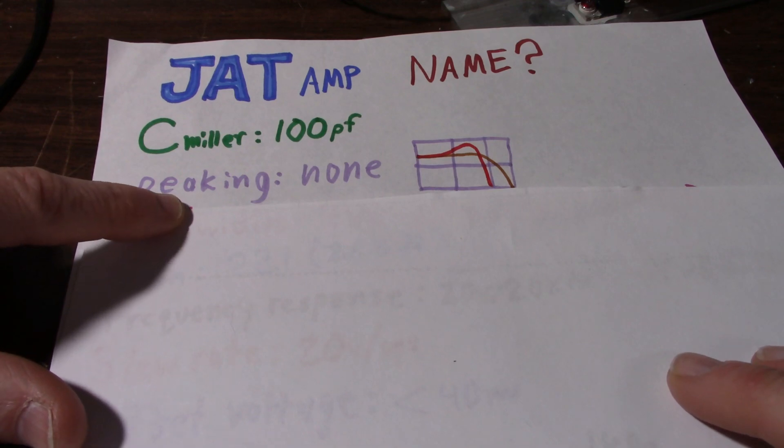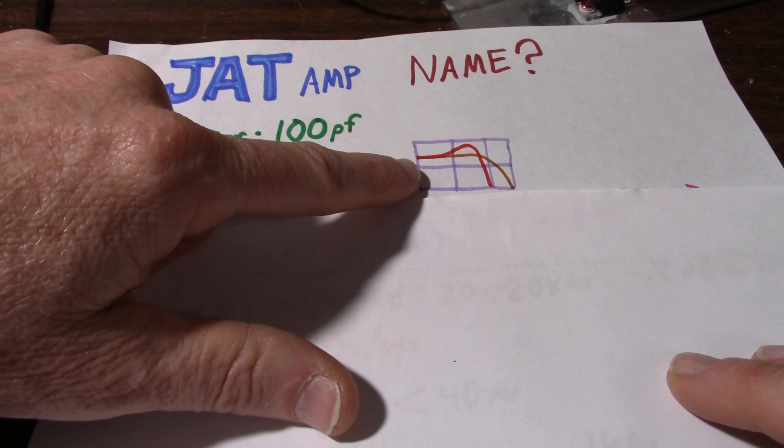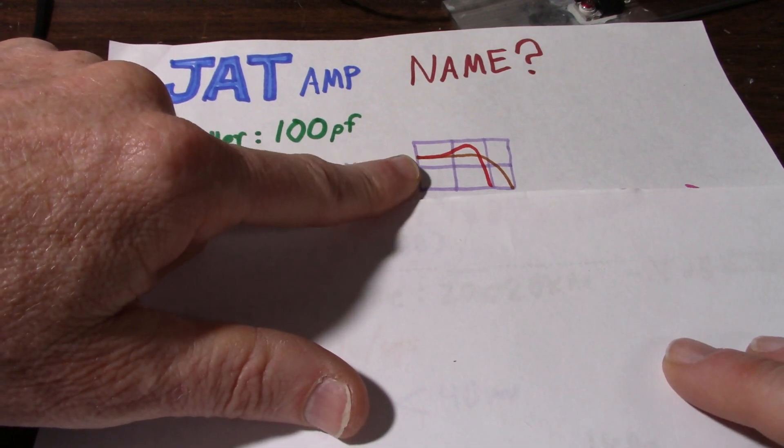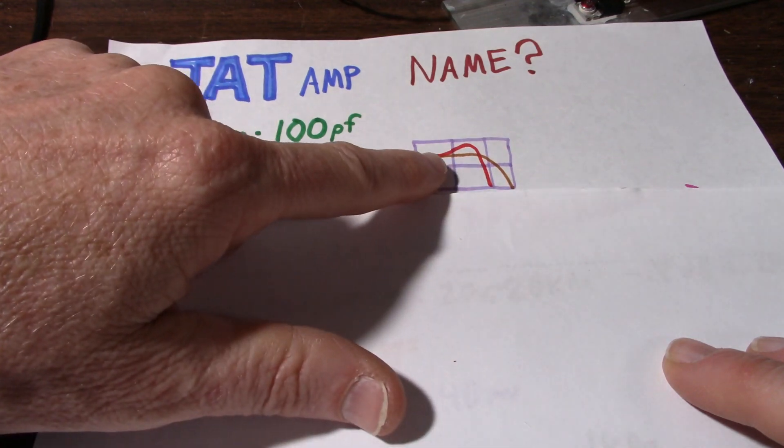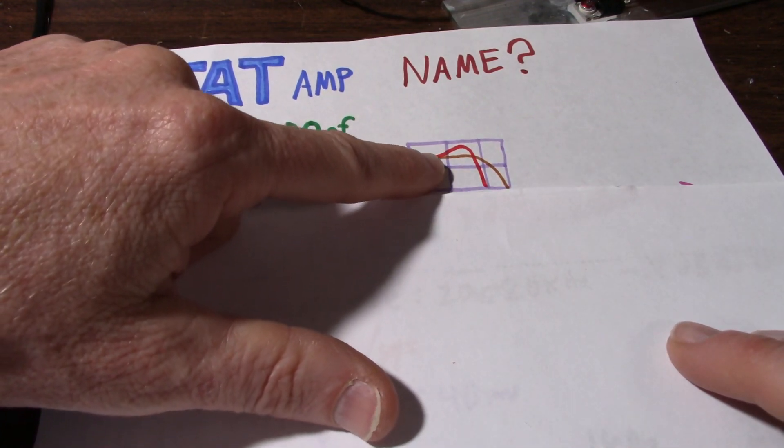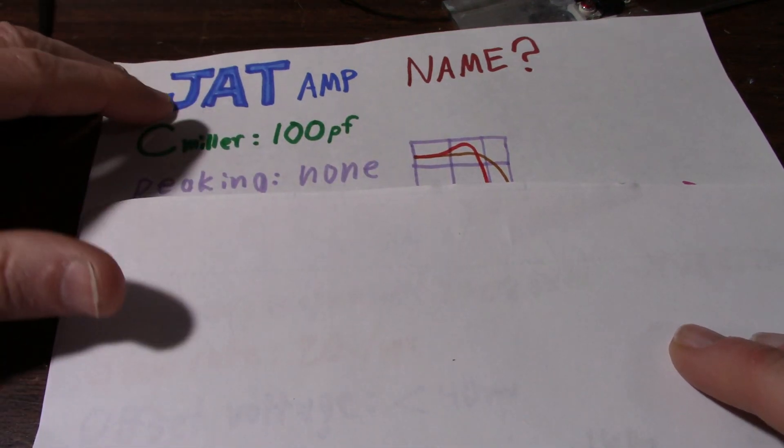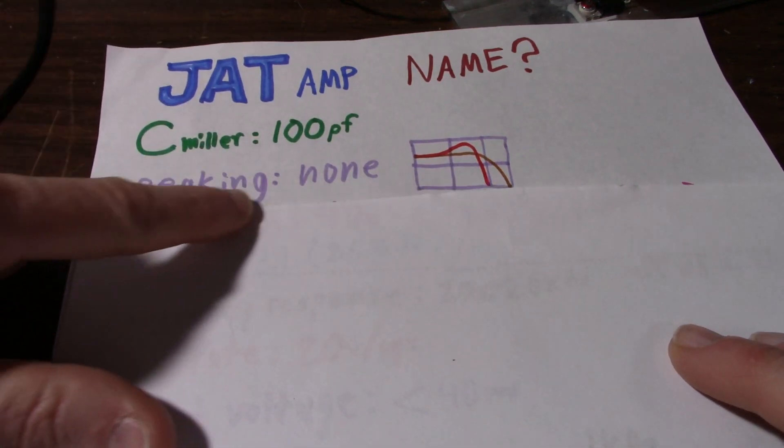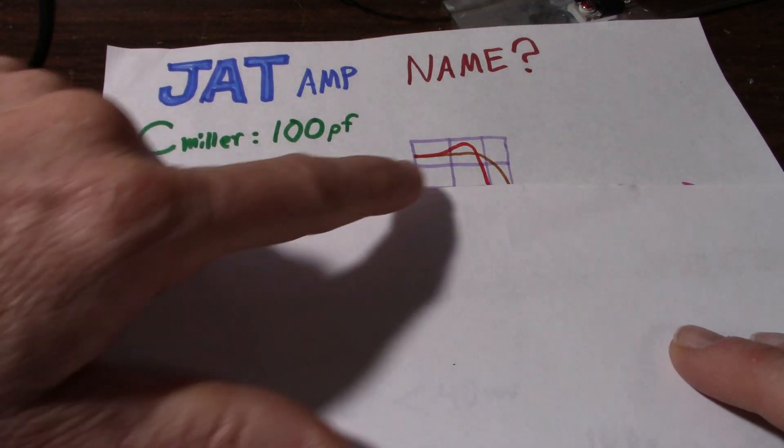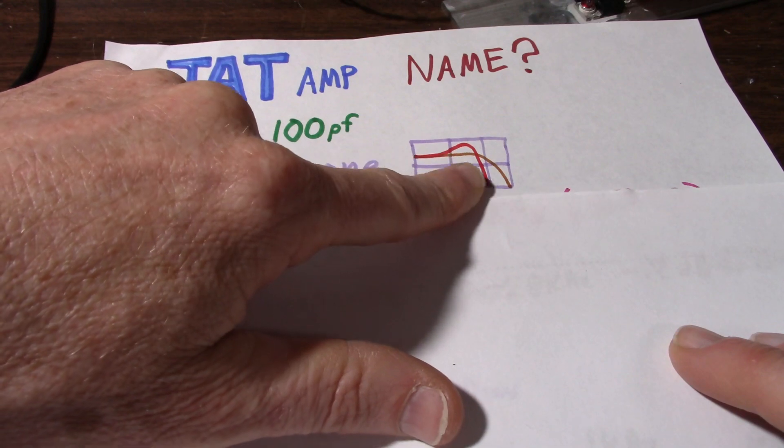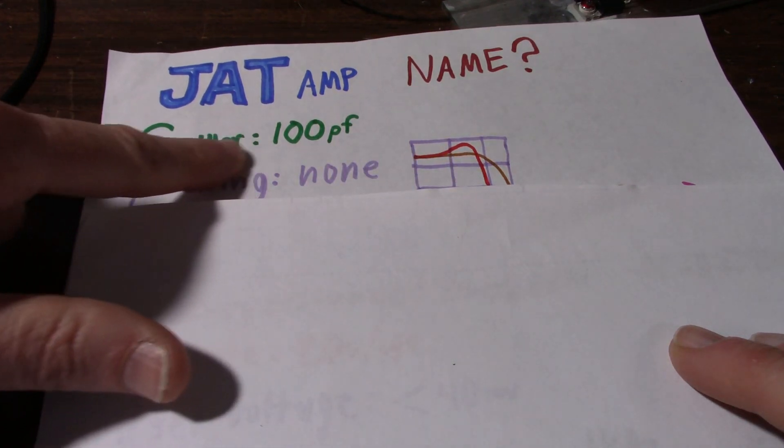The first thing I checked was peaking when I was checking the frequency response. What I would like to see is the amplifier have a nice response and then start to roll off at some high frequency. I do not want to see it peak up and then roll off. That means there could be a stability issue. And there was no peaking. It stayed nice and flat until it rolled off. And what dictates the upper frequency response of the amplifier is this miller capacitance.